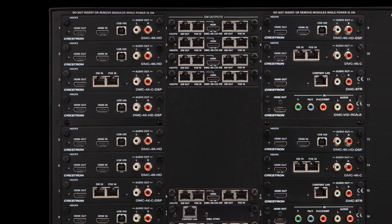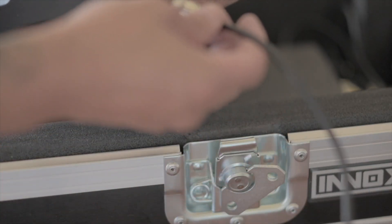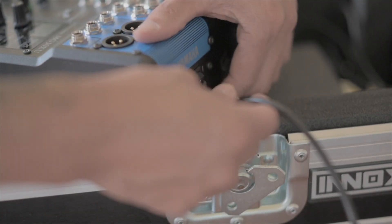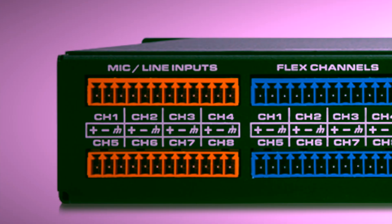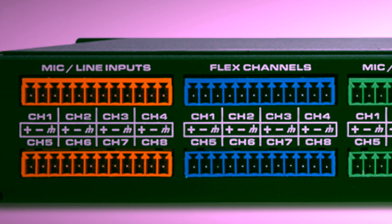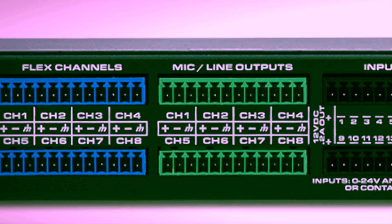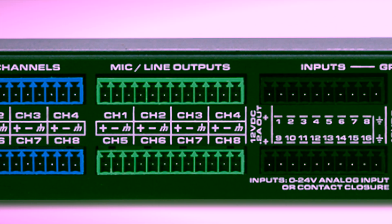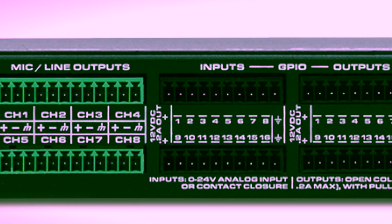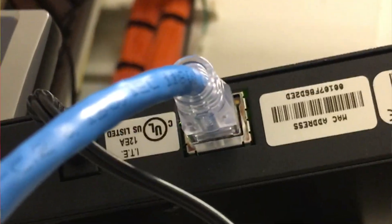One of the first things we learn about in ProAV are inputs and outputs. Then we go into the types of inputs and outputs. For this video, let's focus on audio and video inputs and outputs. Control and processing are part of ProAV as well, but I'll try to keep it as simple as possible in this video.